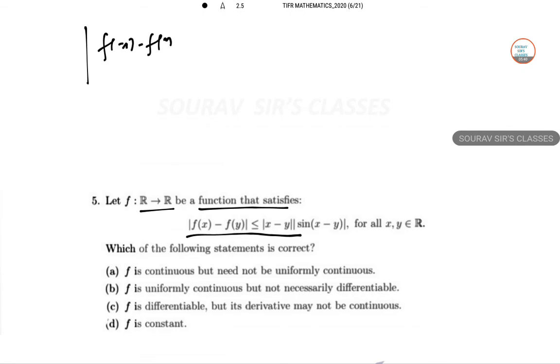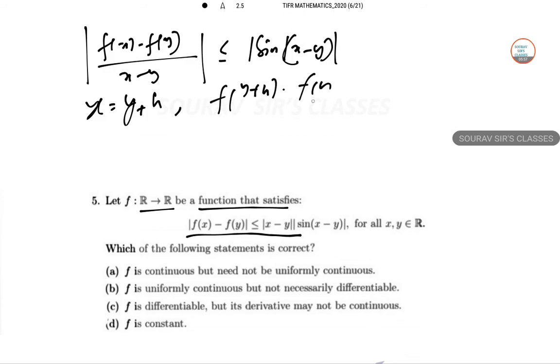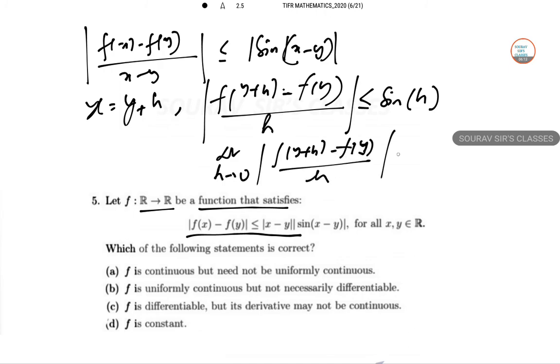So f x minus f y divided by x minus y less than or equal to mod of sin x minus y. So by putting x equal to y plus h we get f of y plus h minus f of y by h. This is modulus less than or equal to sin h.